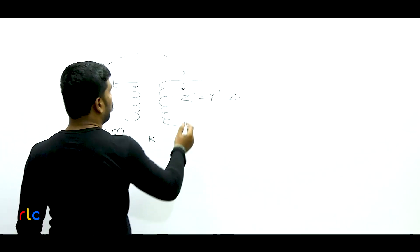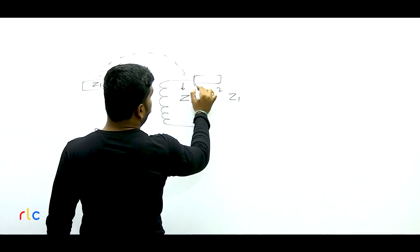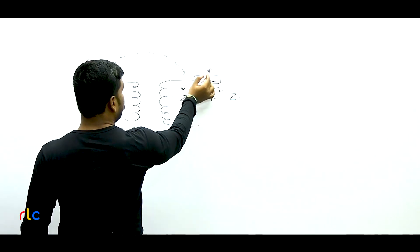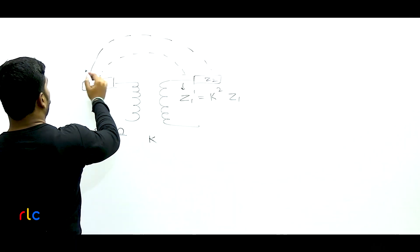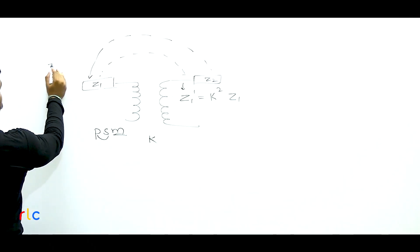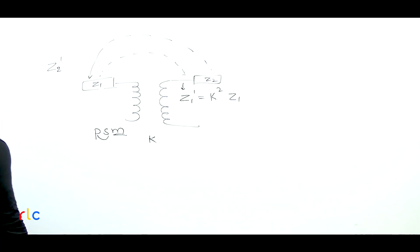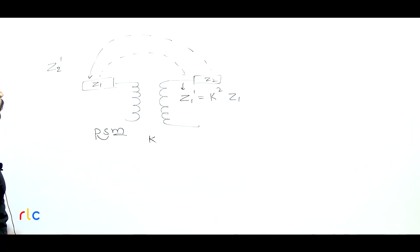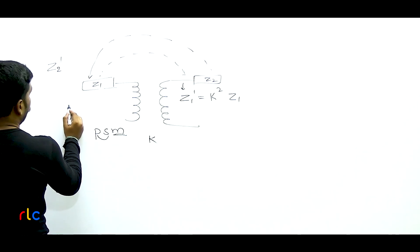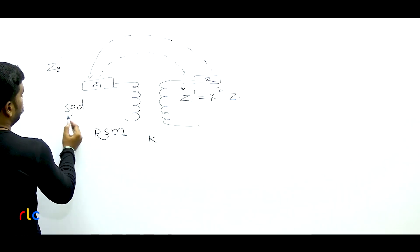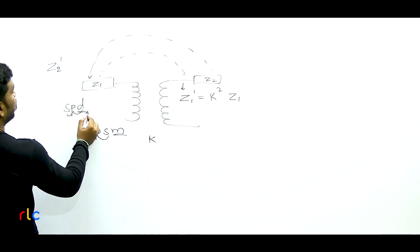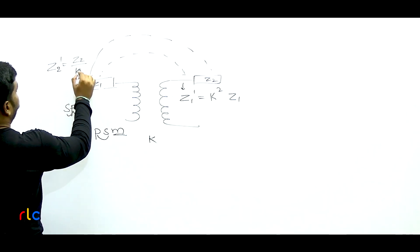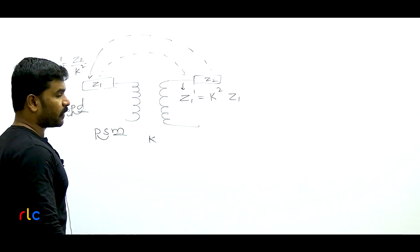If there is an impedance Z2 on the secondary side that needs to be transformed to the primary side, it becomes Z2 dash. The technique is SPD — Secondary to Primary Divide by K squared. So Z2 referred to primary = Z2 / K².